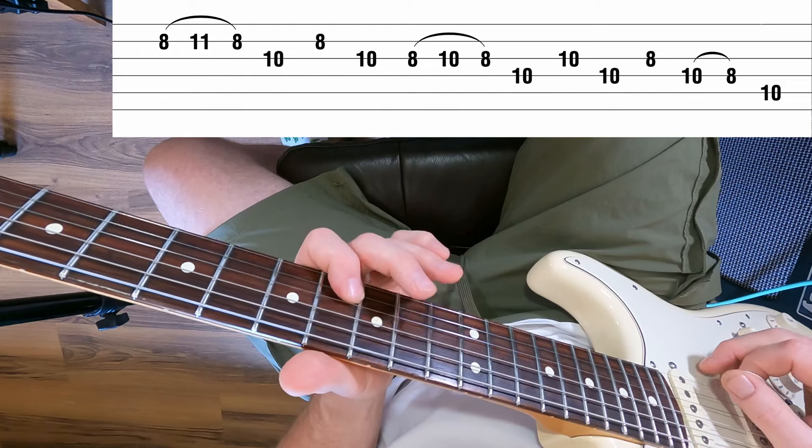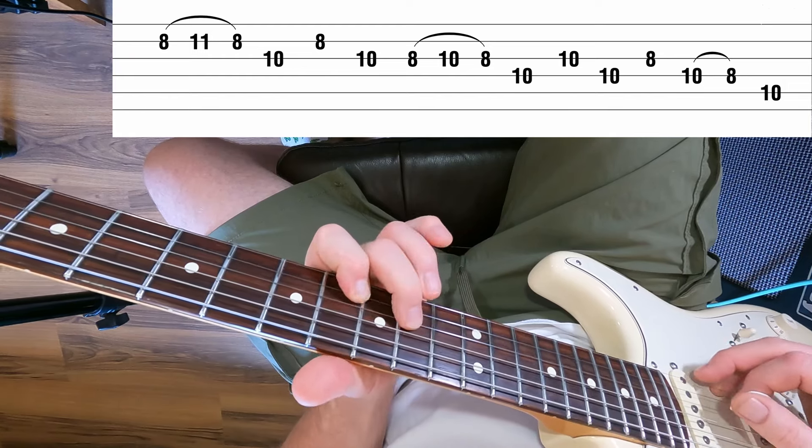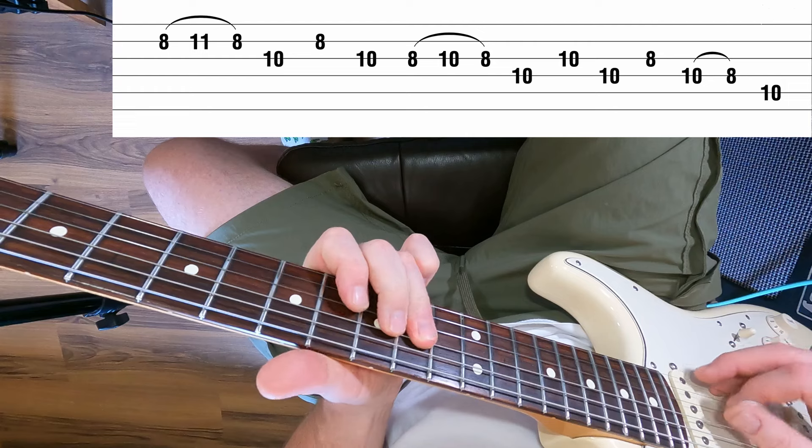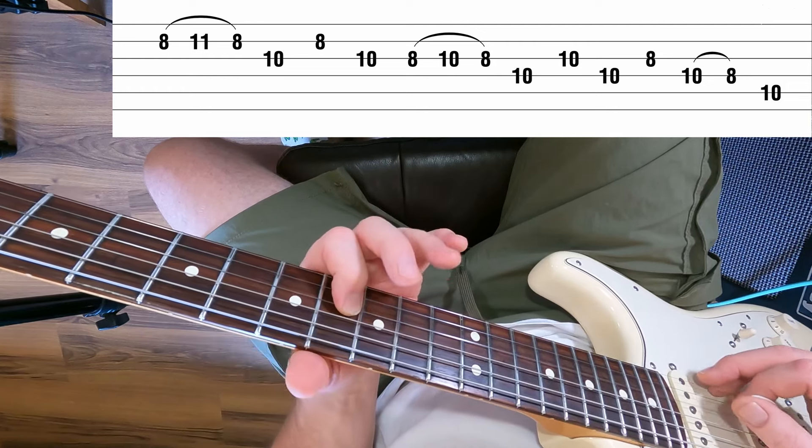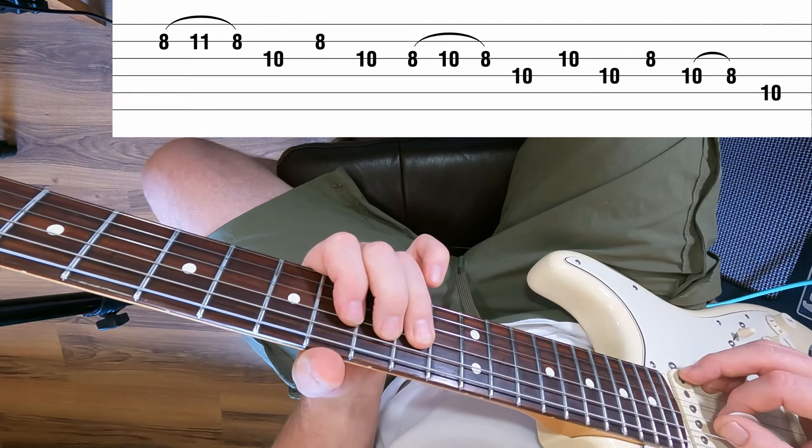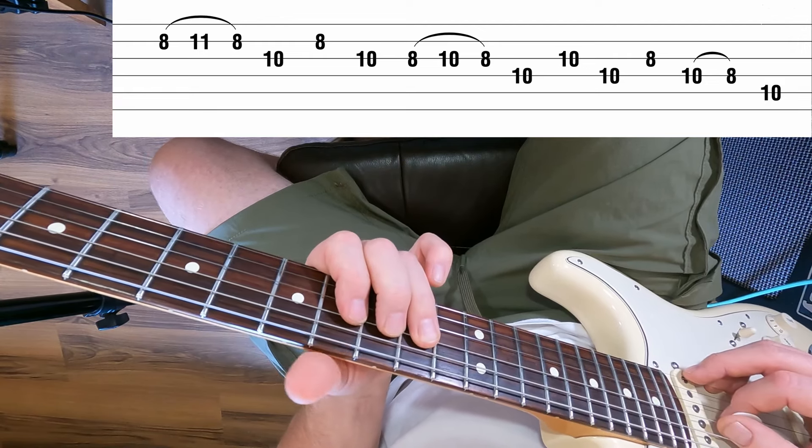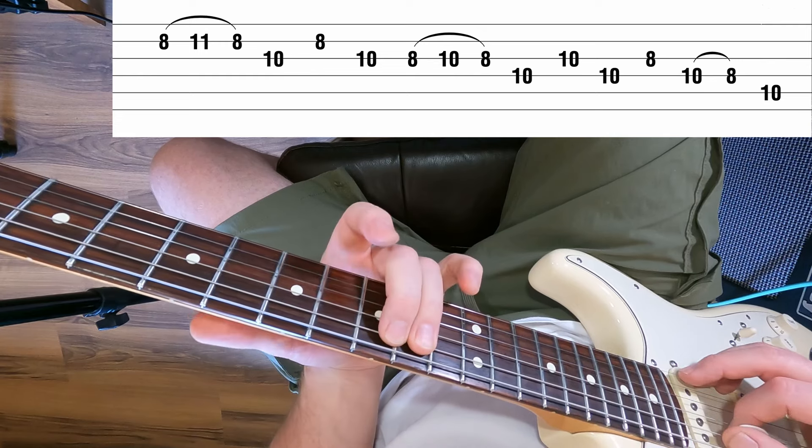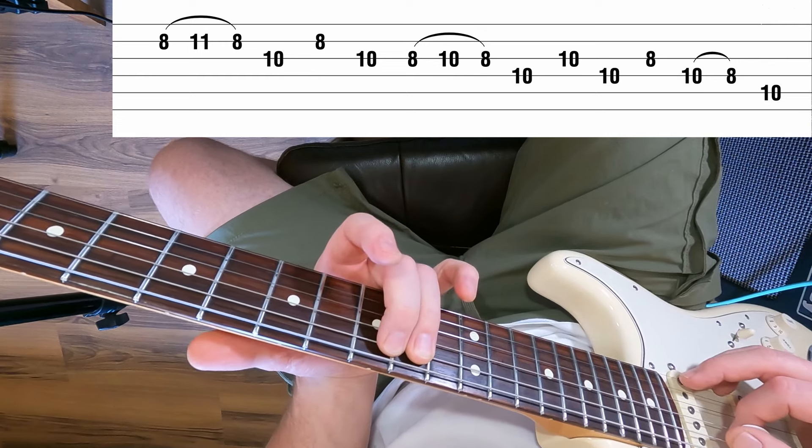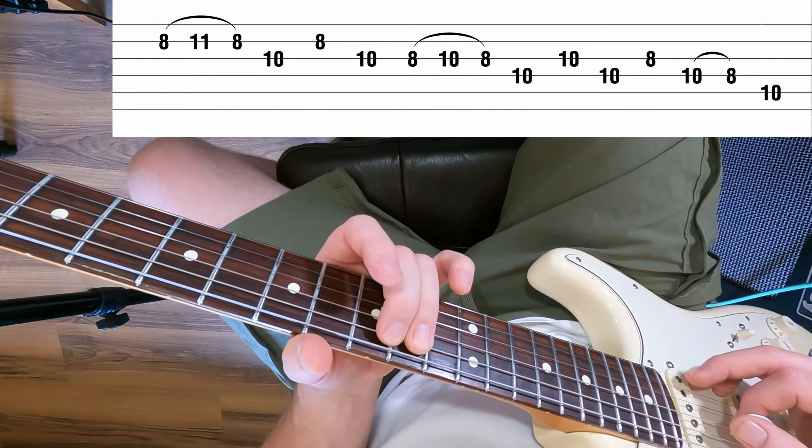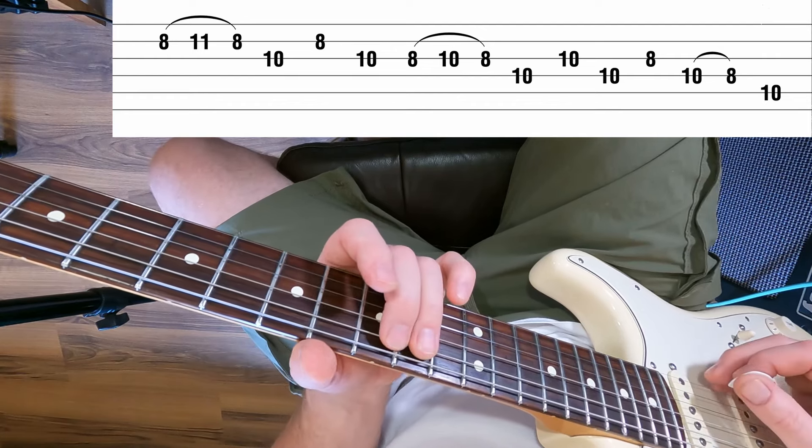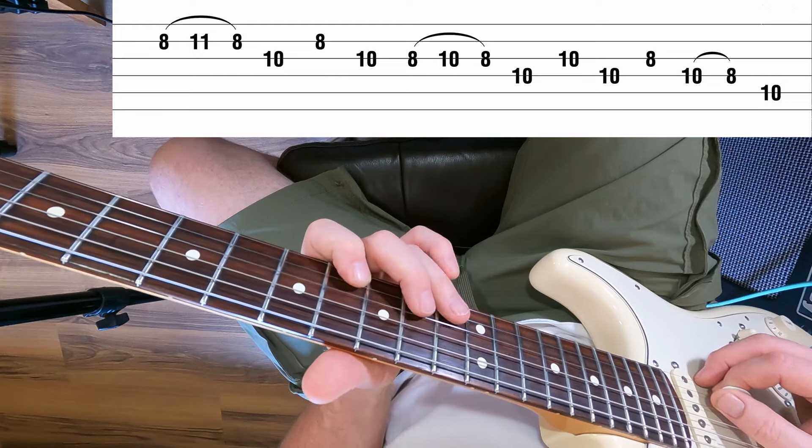It's all alternate picking starting on a down pick. Then we drop back to the eighth fret on the G, then do a pull-off 10 to 8 on the D, and it finishes on the same note we started on, the 10th fret of the A string, which is our G, our five chord.